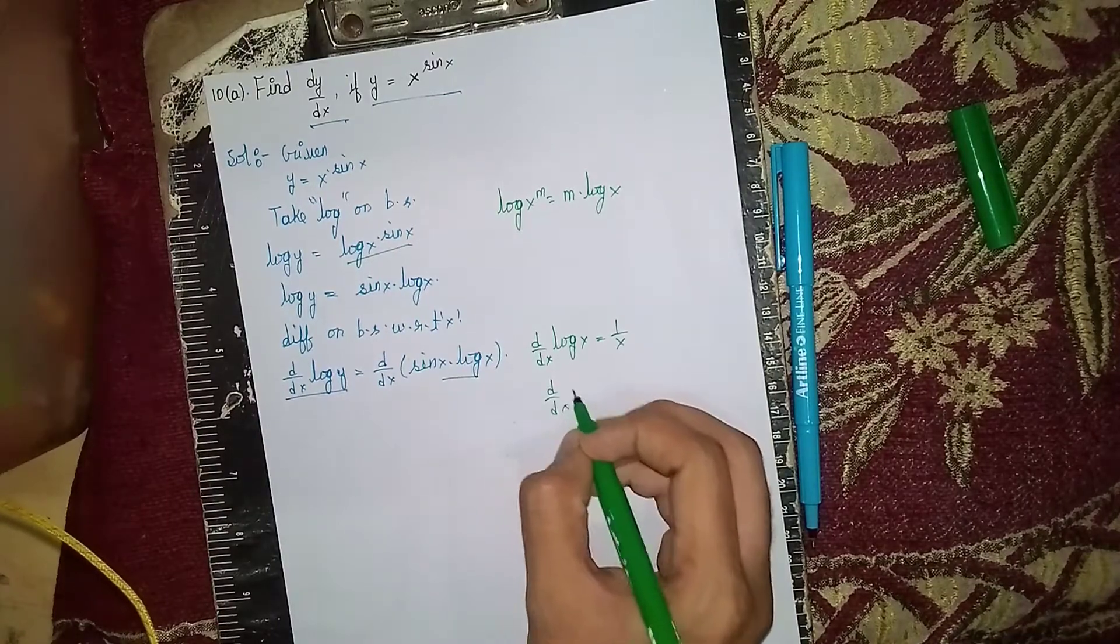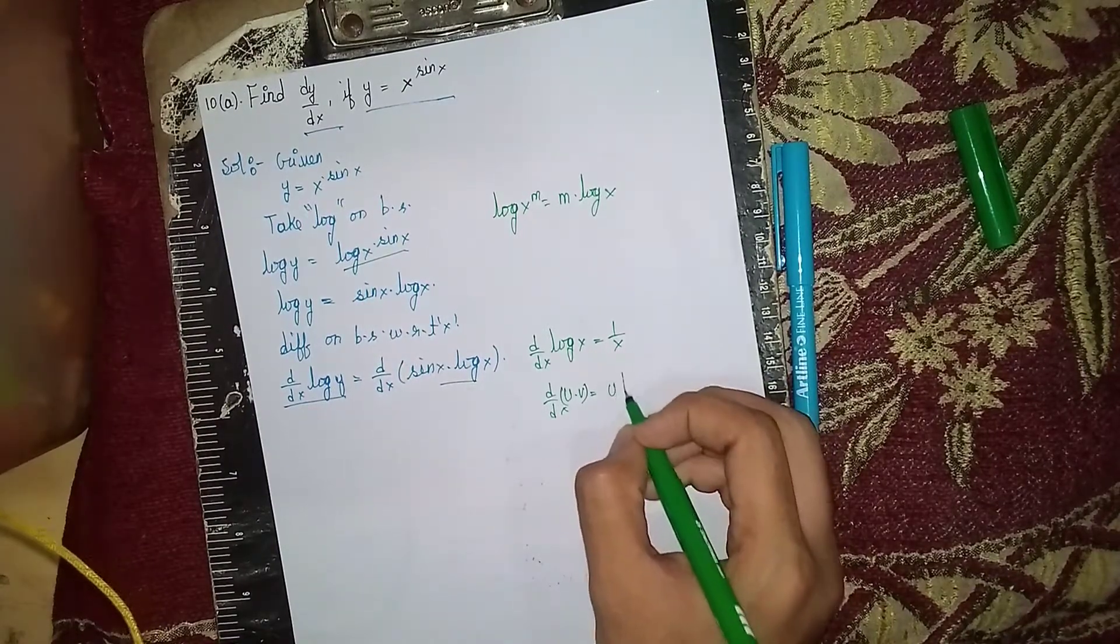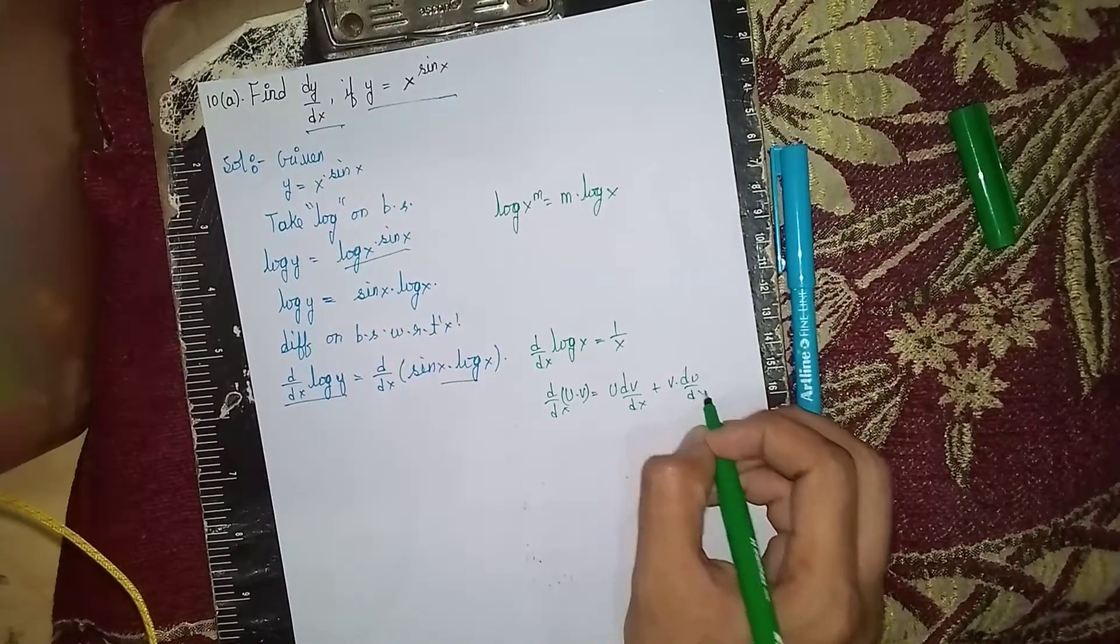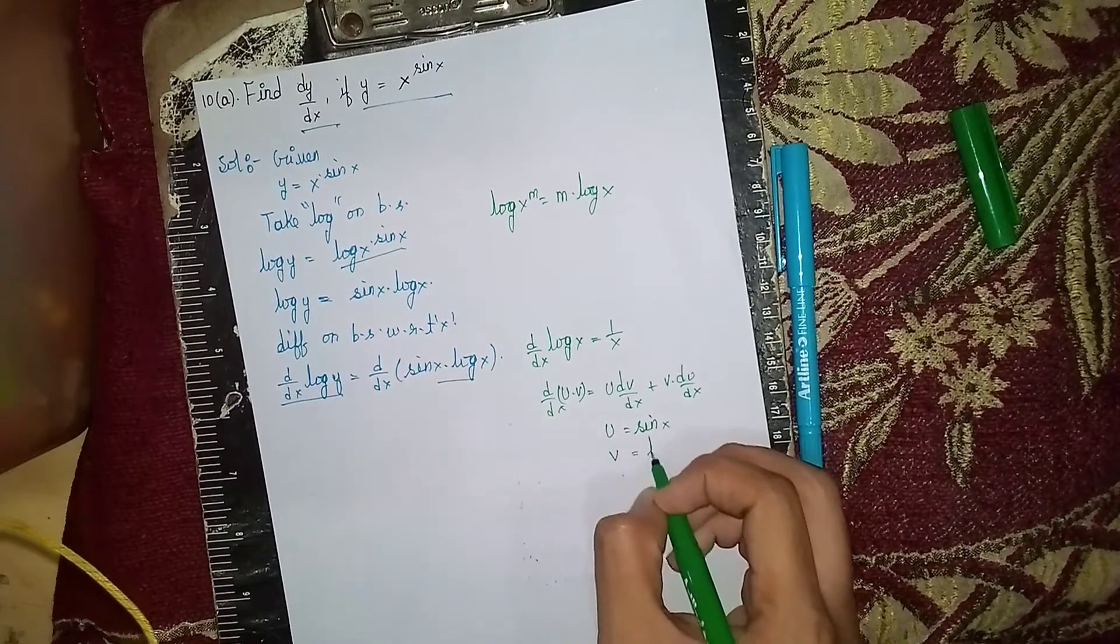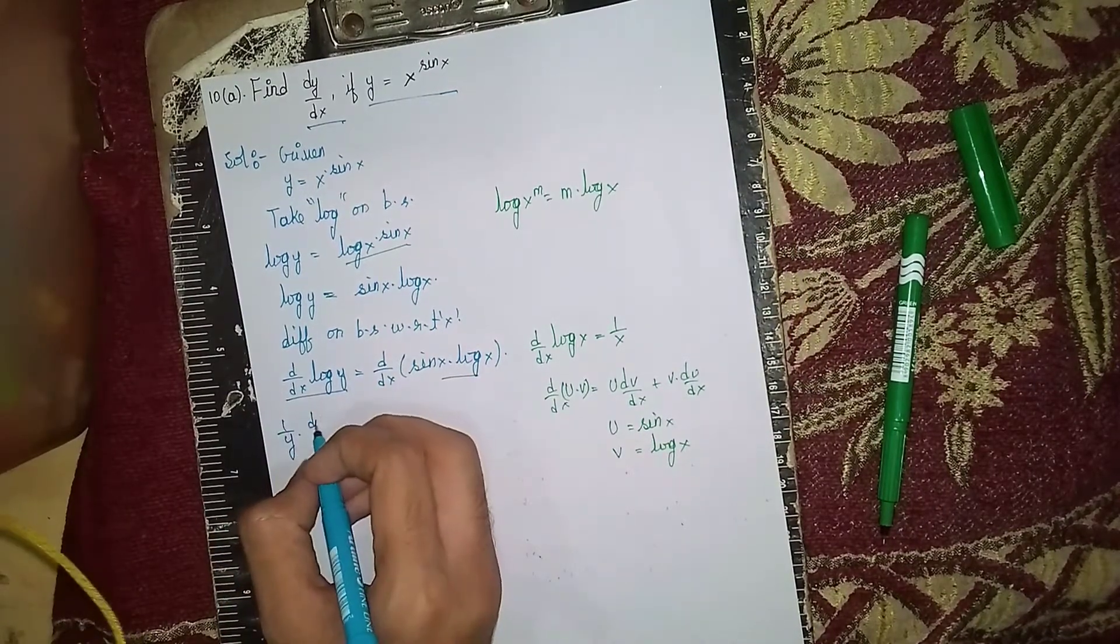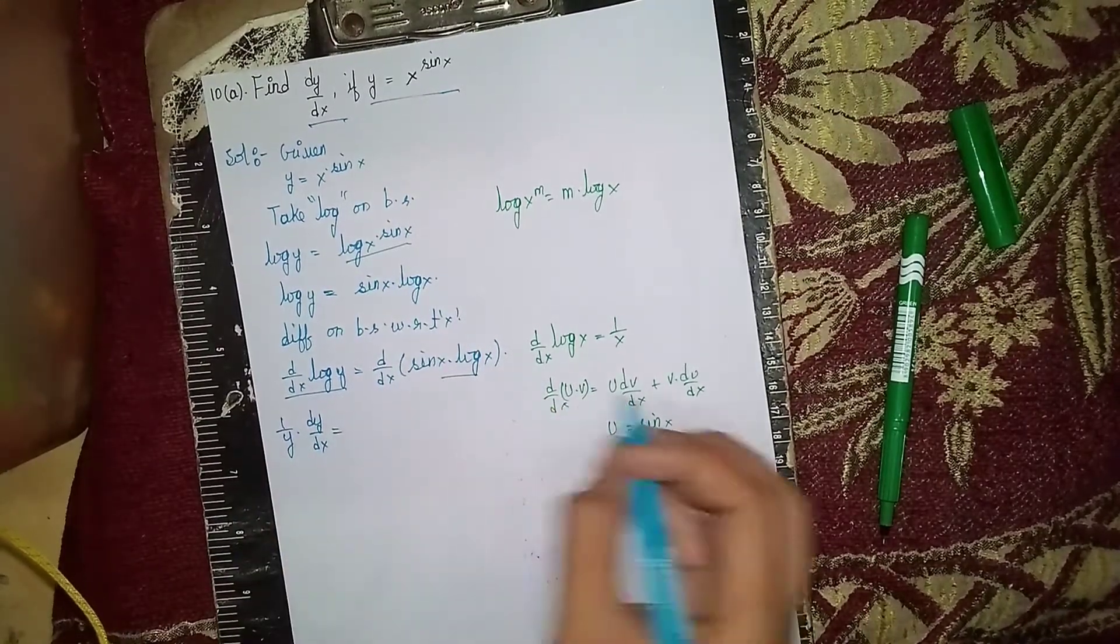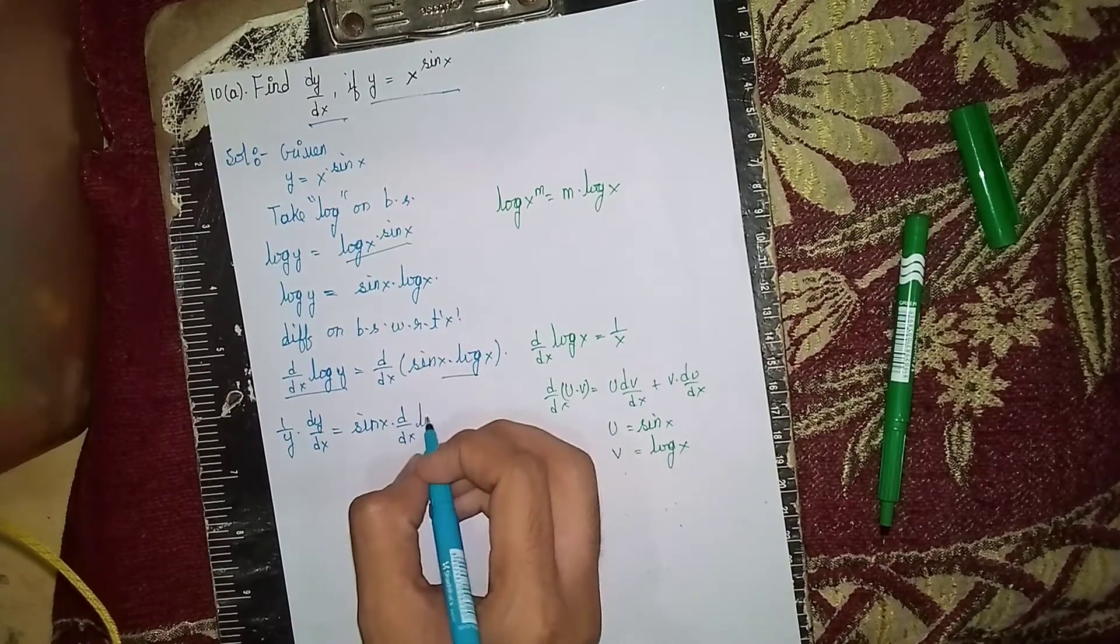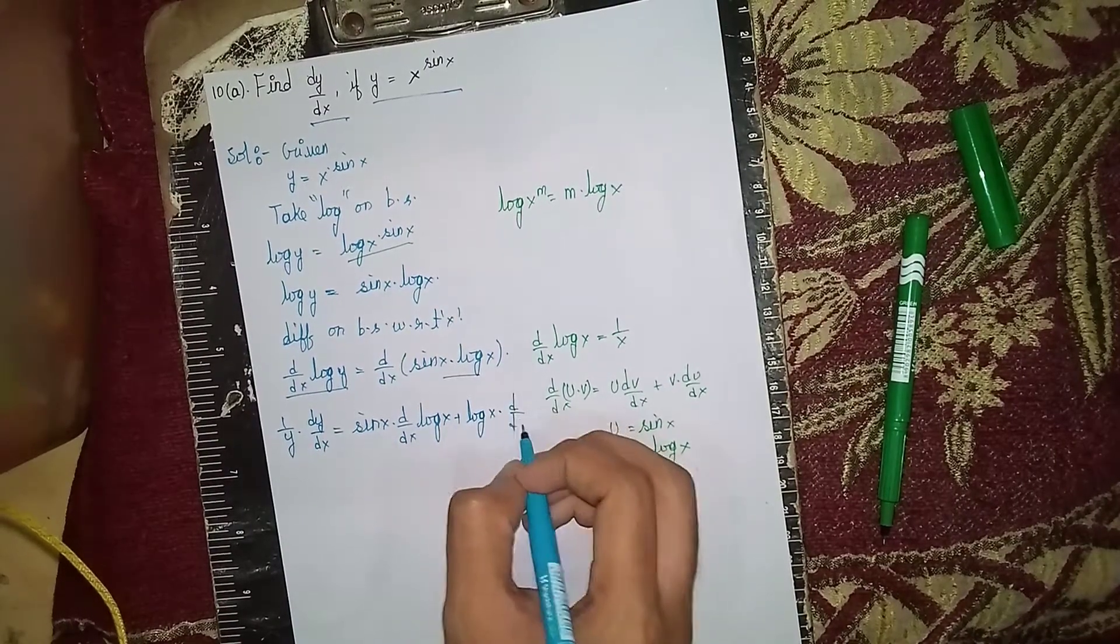For the right side, d/dx of u into v, we use the product rule: u times dv/dx plus v times du/dx. So sin x times d/dx of log x plus log x times d/dx of sin x.